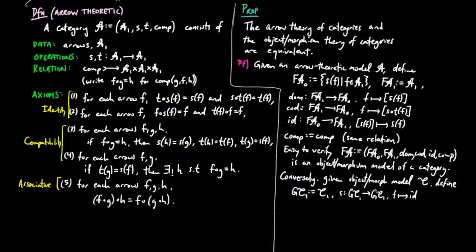to the identity of the domain of f, and the target to take a morphism f to the identity of the codomain of f. In this case, we also have the same composition relation. Then it is also easy to verify that gc is an arrow theoretic model of a category.